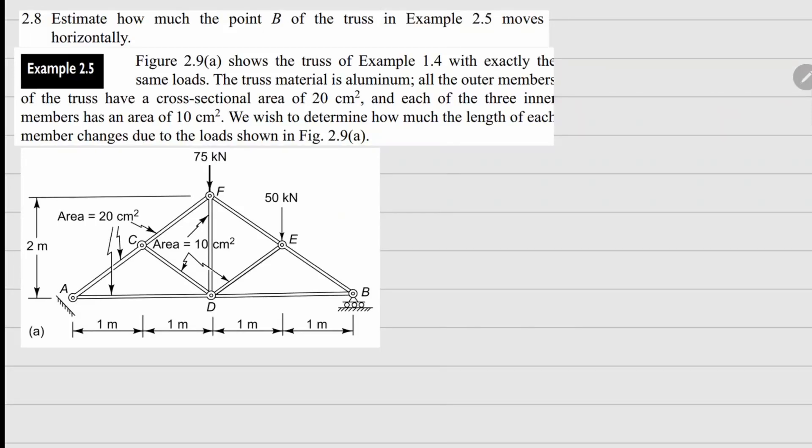This is problem 2.8. We need to go back to Example 2.5 and find out where point B moves horizontally. I have a copy of Example 2.5 here, a simple truss structure similar to problem 2.7 with two horizontal members. Since point A is fixed, for the horizontal movement at point B, if I combine delta 1 coming from here and delta 2 coming from here, I should be able to find the position of point B.